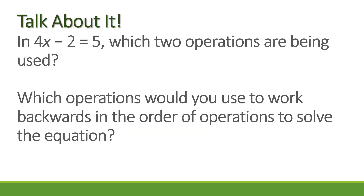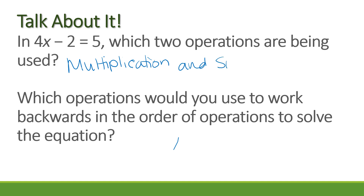Our first example: 4x minus 2 equals 5. The first thing you should think about is what two operations are already being used. I see multiplication and subtraction. So what would I use to work backwards? How do I undo multiplication? Dividing — that's the inverse. How am I going to undo the subtraction? We're going to add. Which one do we do first? Is there a loose number? Yes — the 2. So we're going to add 2 to the other side first. Then we're going to divide by 4, because that's what's being multiplied.